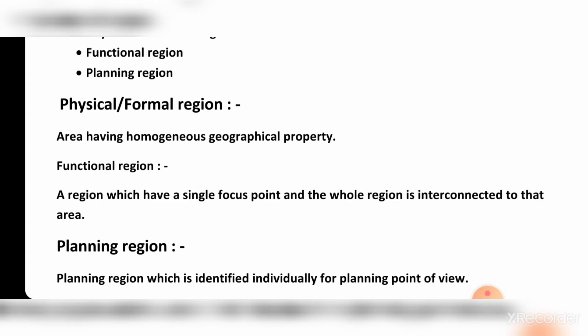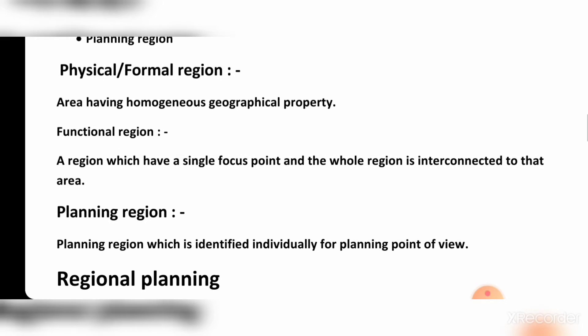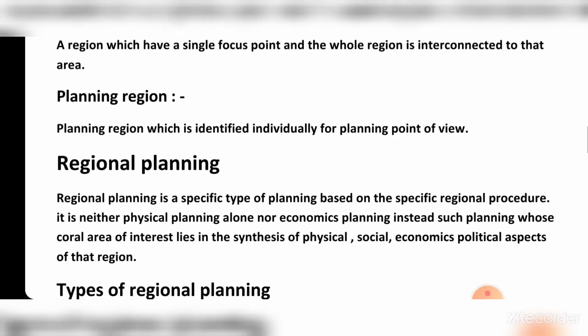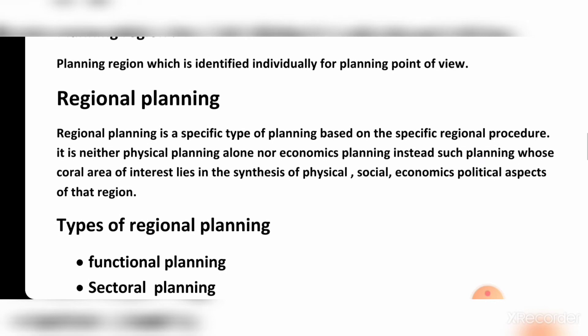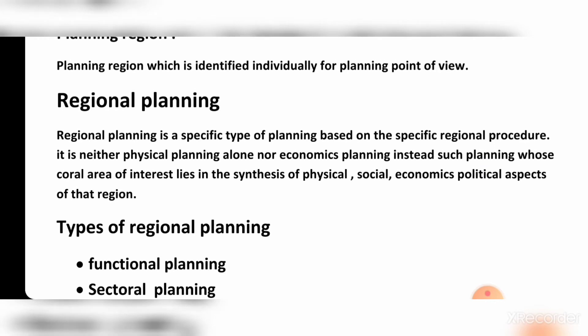For example, a technological hub such as a software or electronics area is a functional region. A planning region is one which is identified individually from a planning point of view.